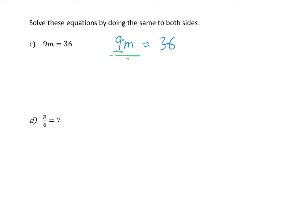So I divide by 9 on the left-hand side and divide by 9 on the right-hand side. That then becomes m is equal to 36 divided by 9, so m is equal to 4.